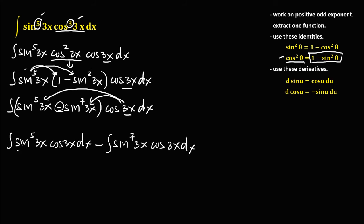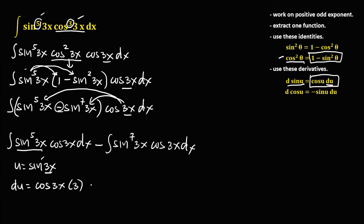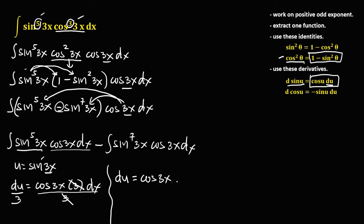Using u-substitution, let u = sin(3x). The derivative of sin is positive cosine, so du = cos(3x) times 3 dx. Since we only have cos(3x) dx, we divide every term by 3, giving du/3 = cos(3x) dx.